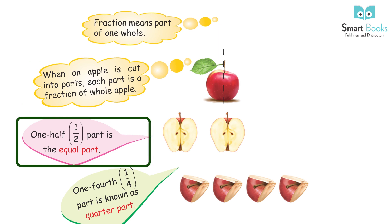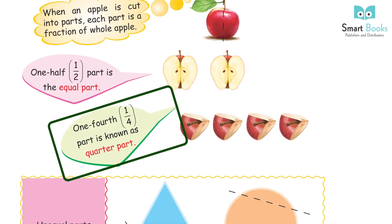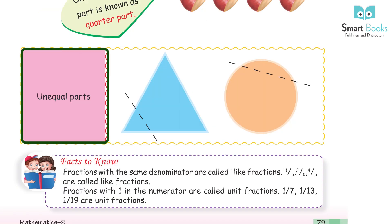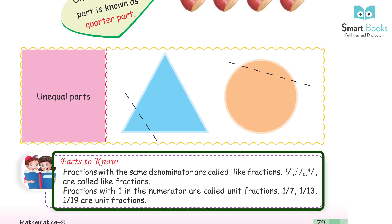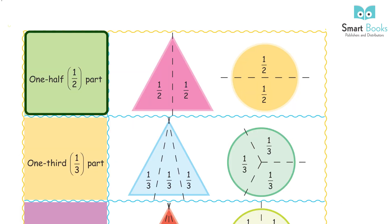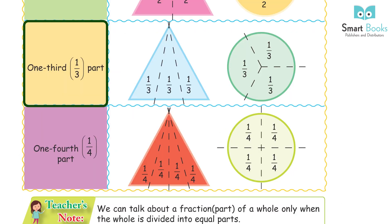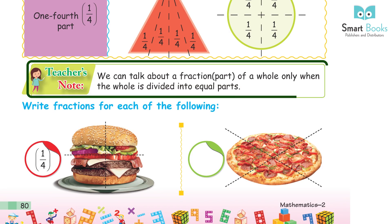One half part is an equal part. One fourth part is known as a quarter part. Facts to know: fractions with the same denominator are called like fractions — for example, one upon five, three upon five, and four upon five are like fractions. Fractions with one in the numerator are called unit fractions — for example, one upon seven, one upon thirteen, and one upon nineteen are unit fractions.